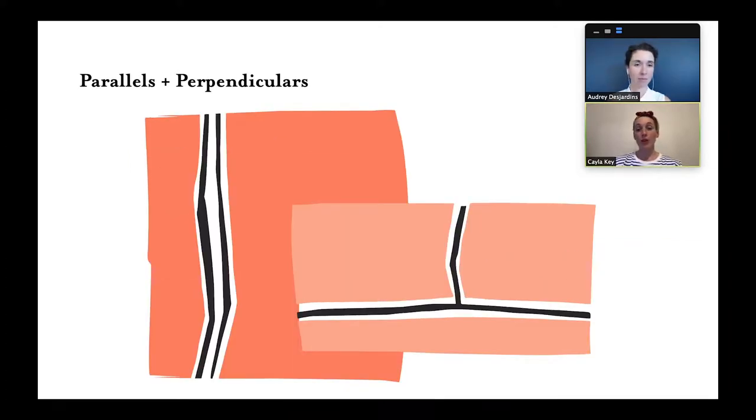Parallels arose when we were pursuing many different avenues of investigation at once, occasionally leading to really generative crossings. In contrast, perpendiculars result when one line's influence causes friction, disruption, or upheaval.